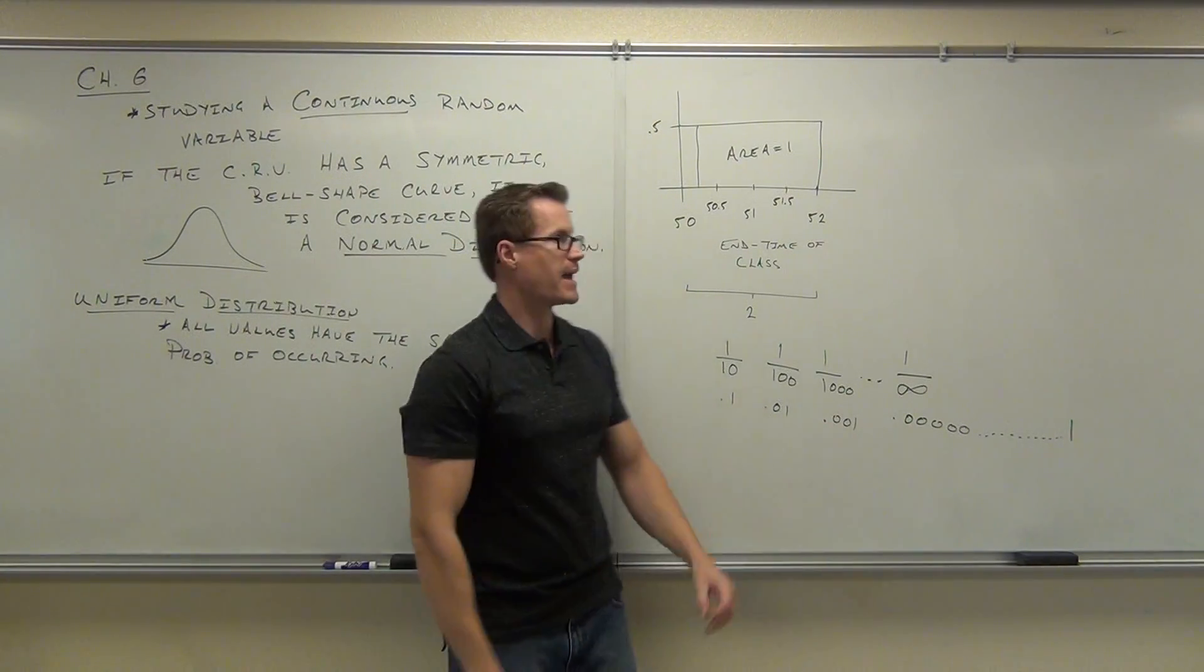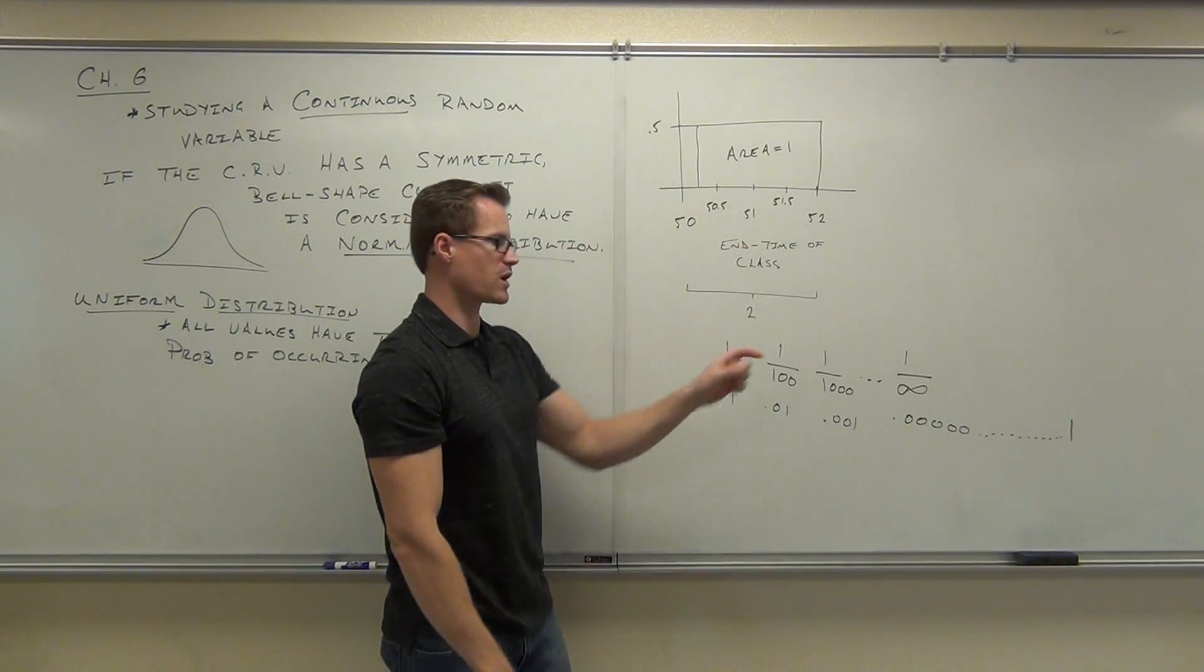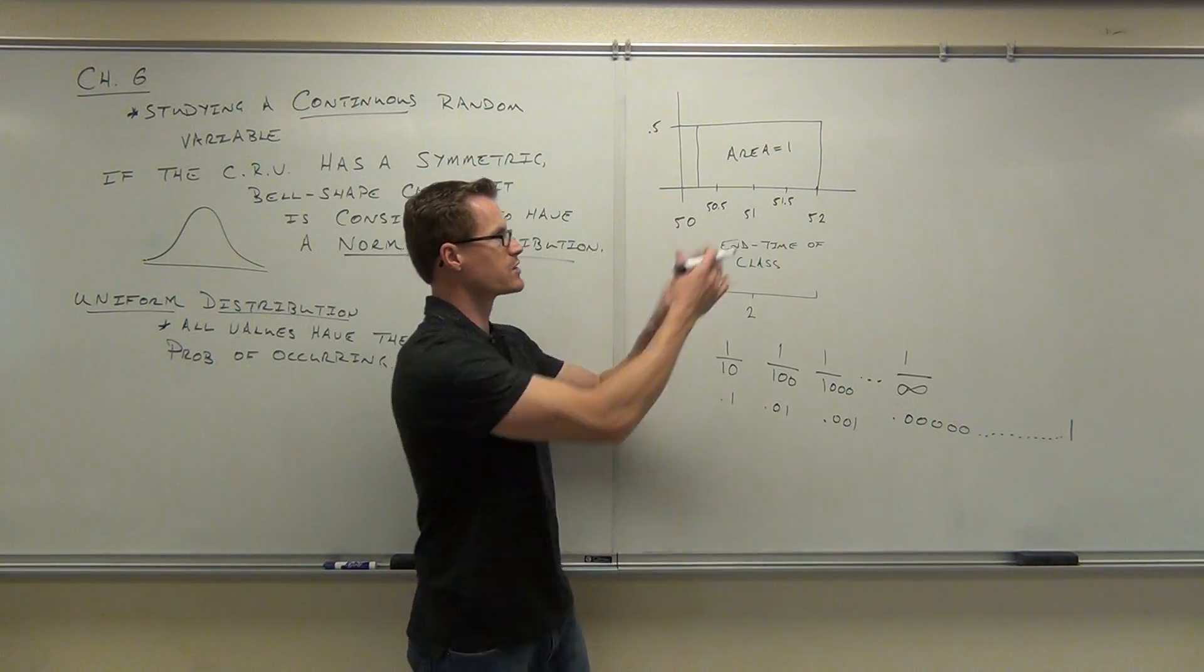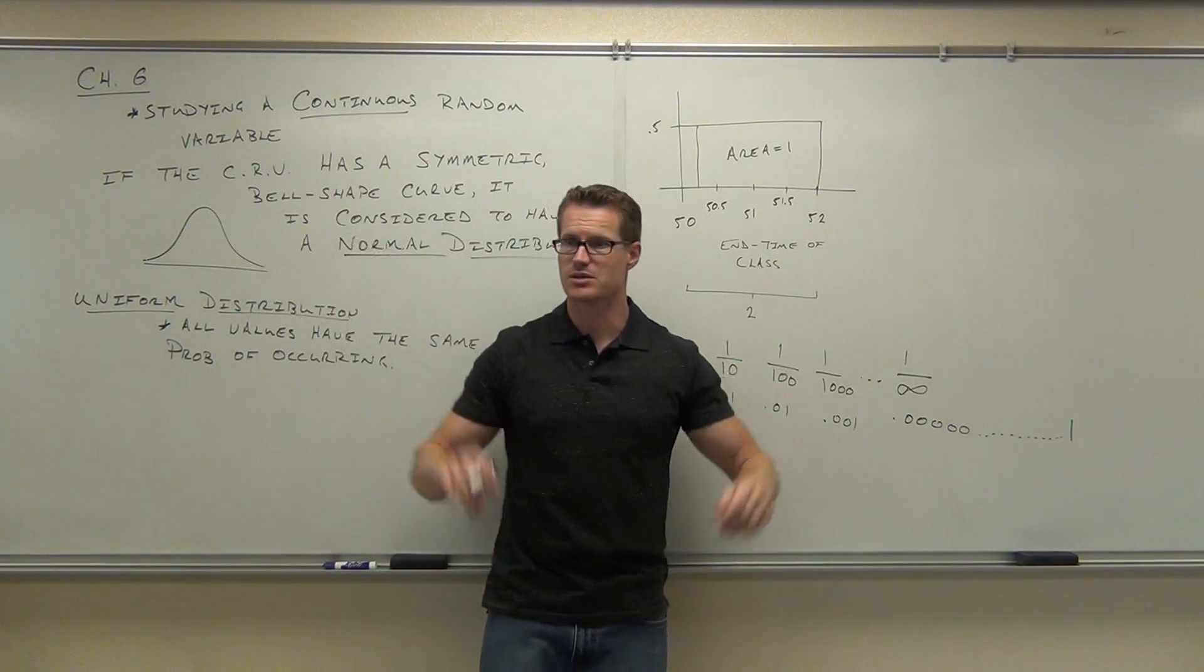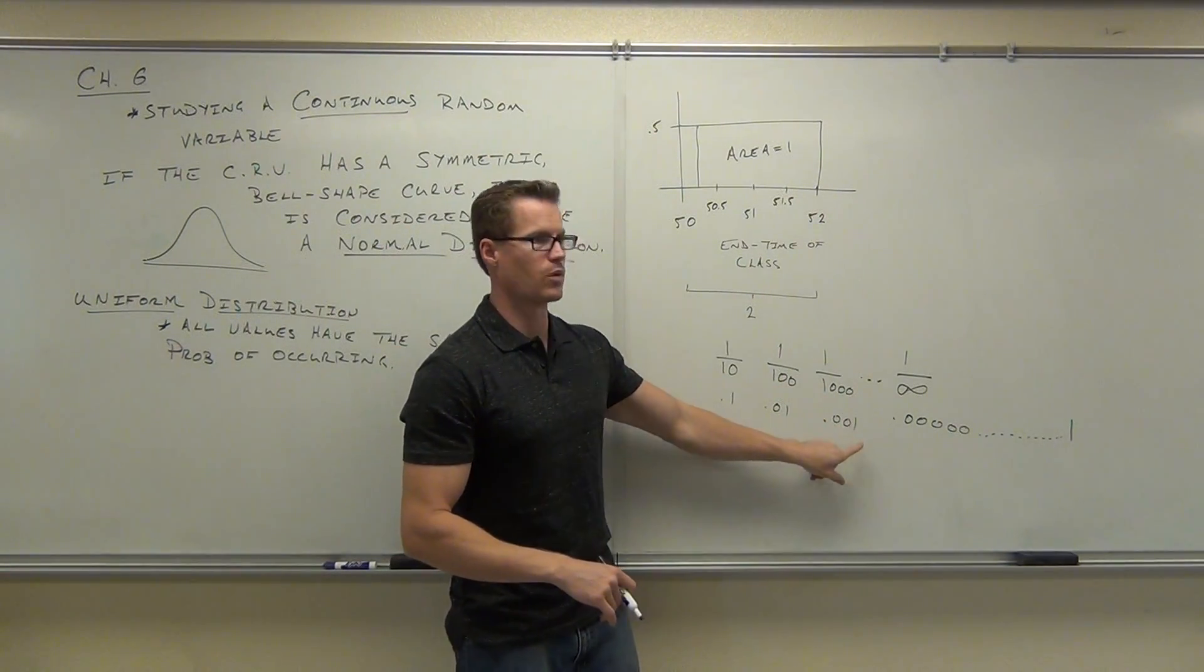This is a probability, right? If I had 10 segments, the probability of choosing one would be 0.1. If I had 100 segments, the probability would be 0.01. If I had 1,000 segments, the probability would be 0.001.